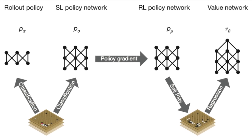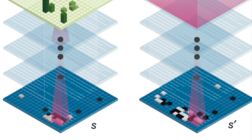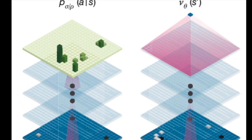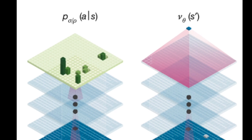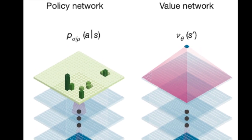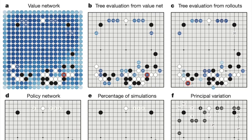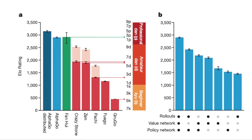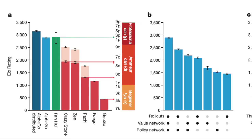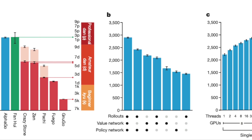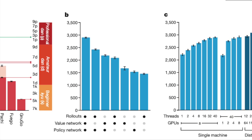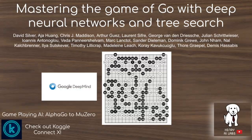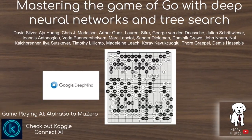In this video, we're going to explain how the three different policy networks — the rollout policy, the supervised learning policy, and the policy trained with self-play and policy gradients — are trained, and how they're used in the Monte Carlo tree search for AlphaGo, as well as the value network. We'll look at other characteristics of the paper and hopefully you get a sense of how AlphaGo and Monte Carlo tree search works, and how these reinforcement learning agents facilitate Monte Carlo tree search.